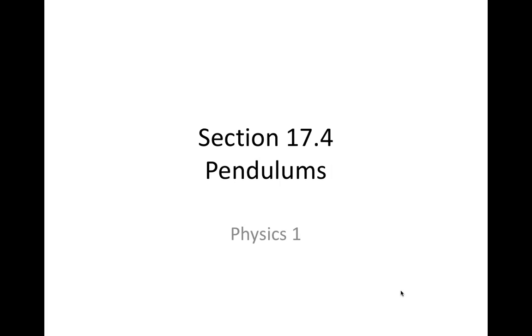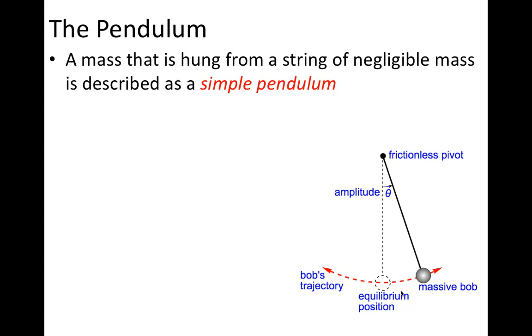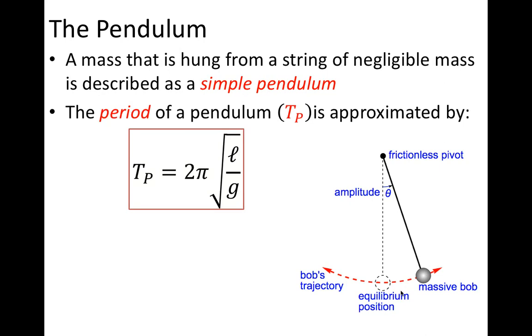In section 17.4, I'm going to discuss pendulums. A pendulum consists of a mass hung from a string, and the string needs to have a very small mass compared to the mass, and the mass is called a bob.